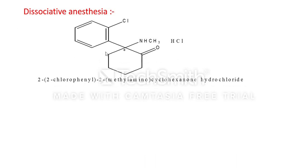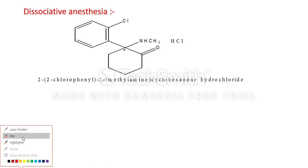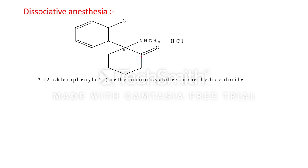The next type of injectable anaesthesia is dissociative anaesthesia. We have covered ultra-short acting anaesthesia — the barbiturates containing thiamylal sodium, thiopental sodium, and methohexital sodium. The next type is dissociative anaesthesia, with the example of ketamine hydrochloride. This is the structure of ketamine hydrochloride. The IUPAC nomenclature of ketamine hydrochloride...